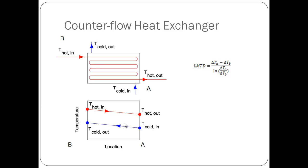ΔT_A is the difference in temperature at the A side, shown as the difference between T_hot,out minus T_cold,in. ΔT_B is the difference in temperature at the B side, or T_hot,in minus T_cold,out.